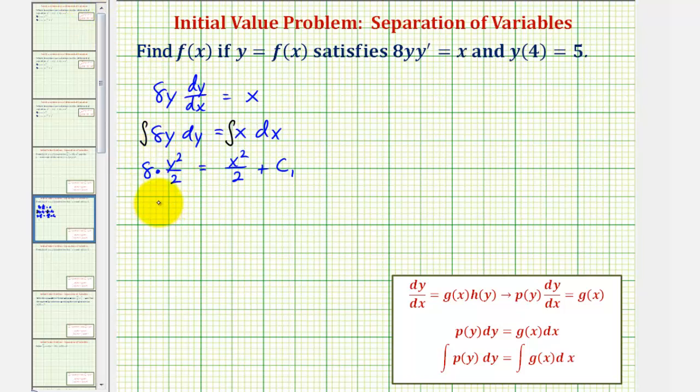So simplifying, we have 4y squared equals, I'll write this as 1/2 x to the second plus c sub 1.